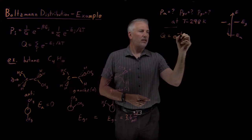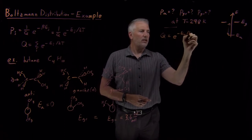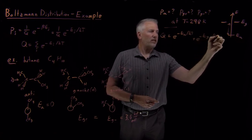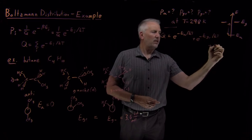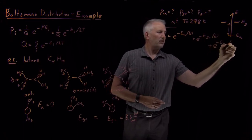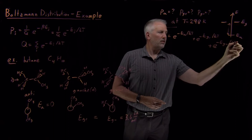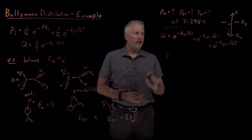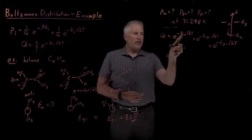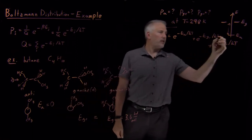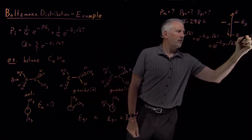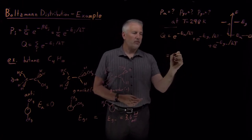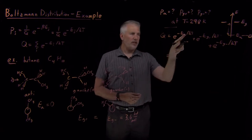Q equals e to the minus E_anti over kT, plus e to the minus E_Gauche+ over kT, plus e to the minus E_Gauche- over kT. Some numbers are relatively easy: E_anti is zero, so that first Boltzmann factor is e to the zero, which equals one. The only terms that take any work are the Gauche terms.